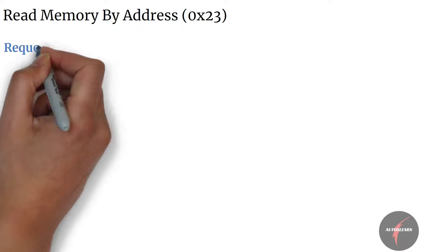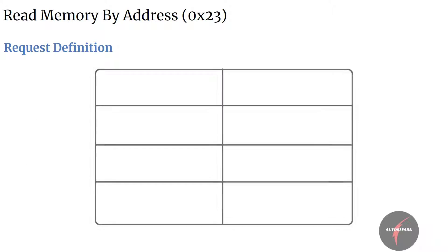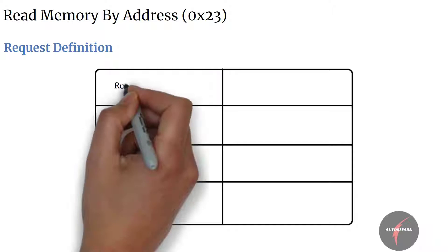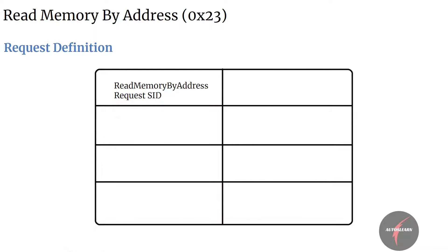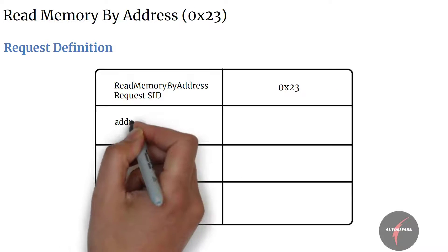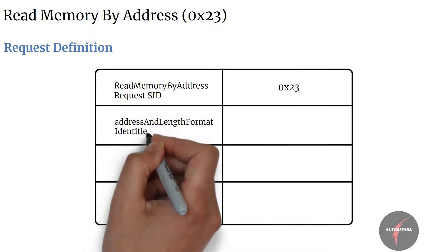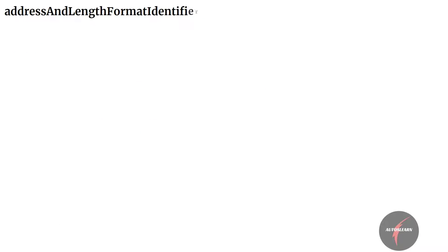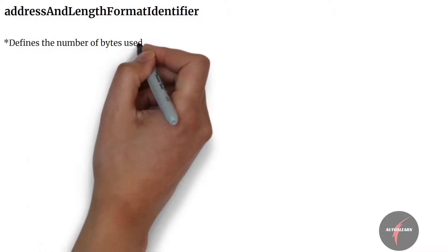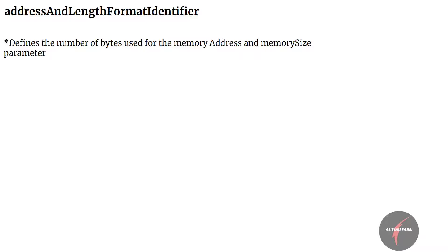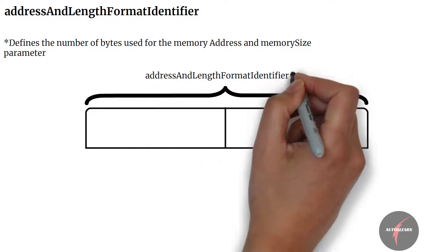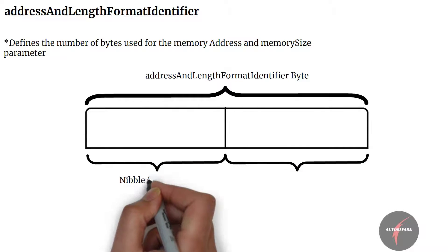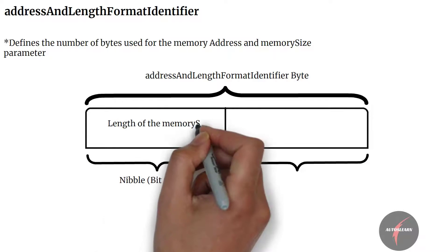With this understanding, let's dive into the request definition of the service. Firstly, we have the Read Memory by Address request SID which maps to value 0x23, followed by the address and length format identifier which can take a value from 0x00 to 0xFF. The address and length format identifier parameter defines the number of bytes used for the memory address and memory size parameter. Each nibble of the byte is encoded separately, with bit 7 to 4 defining the length of the memory size parameter.